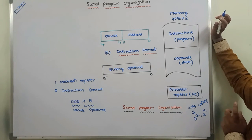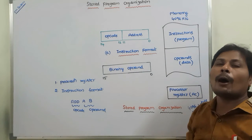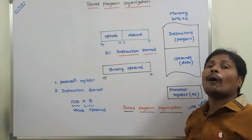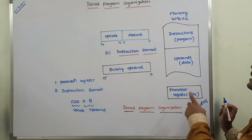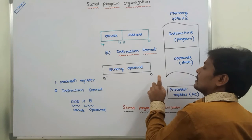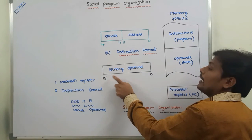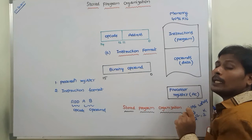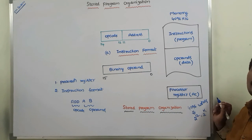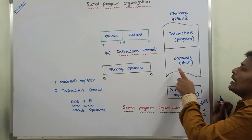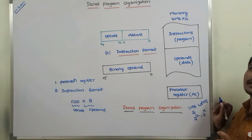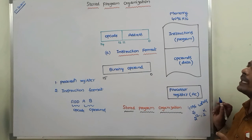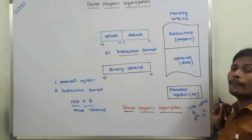To perform the operation specified in the opcode part, we require operands. These operands are stored in the operands part. The operand length is 16 bits, that is bits 0 to 15. These operands are stored in the operand part in binary format. So 16 bits are there for each and every operand, and those operands are used for performing the operation specified in the opcode part.